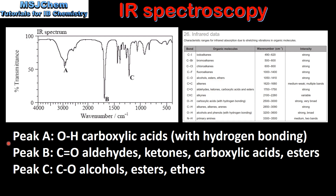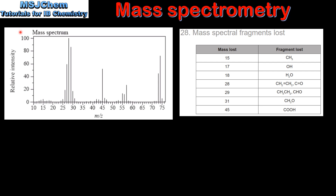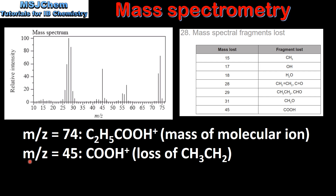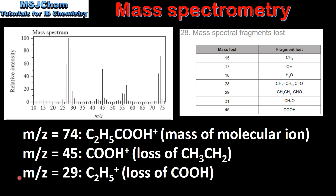By taking into account peak A and peak B we can deduce that the unknown compound is a carboxylic acid. Next we'll look at the mass spectrum for the unknown compound X using table 28 in the data booklet. The peak at mass-to-charge ratio of 74 corresponds to the mass of the molecular ion. The peak at mass-to-charge ratio of 45 corresponds to the fragment COOH⁺, and the peak at mass-to-charge ratio of 29 corresponds to the fragment C2H5⁺.